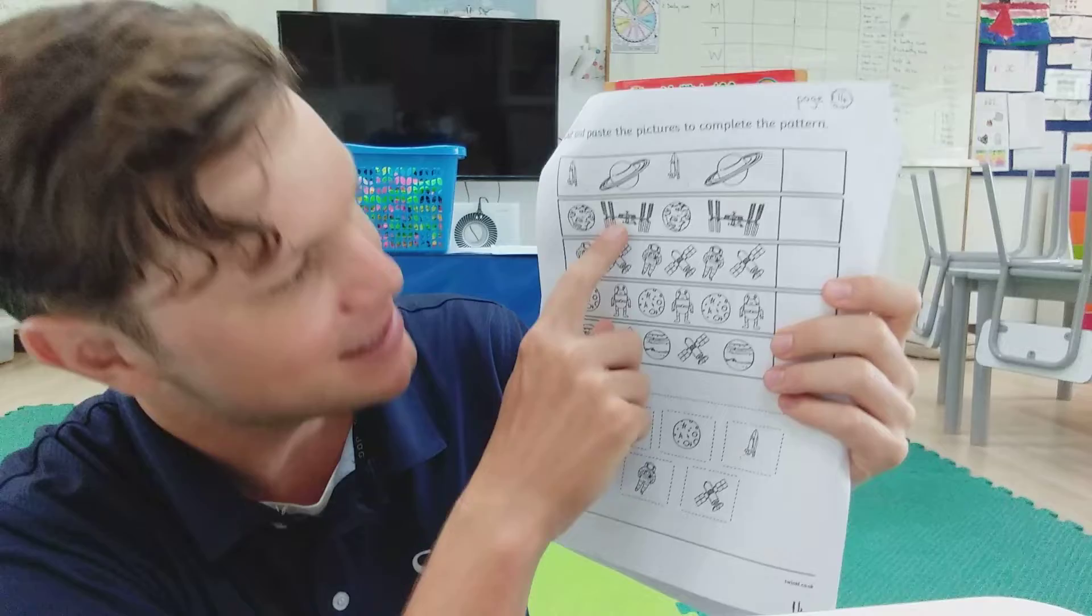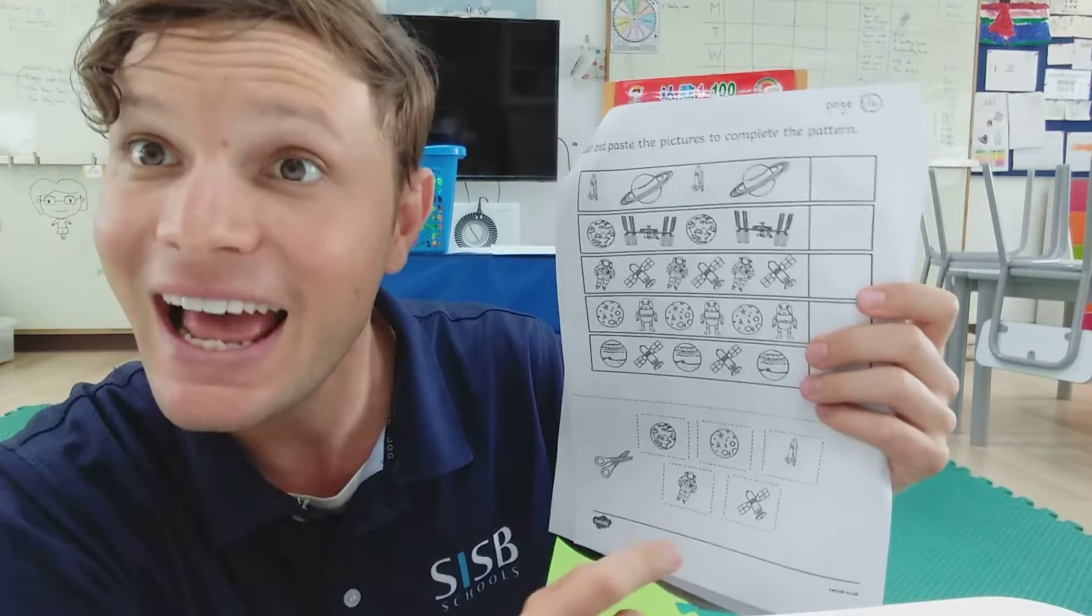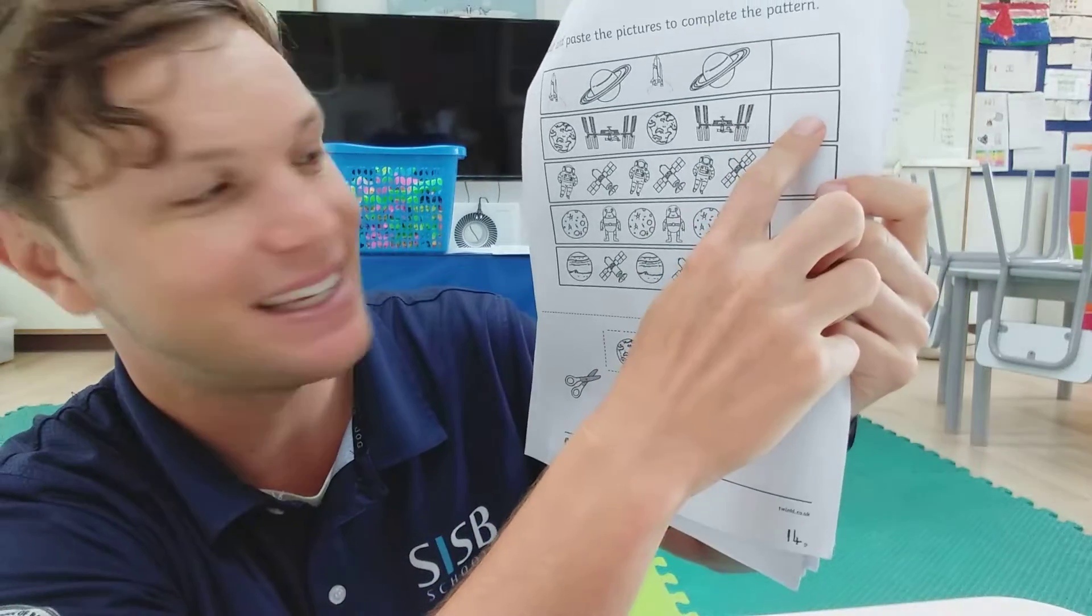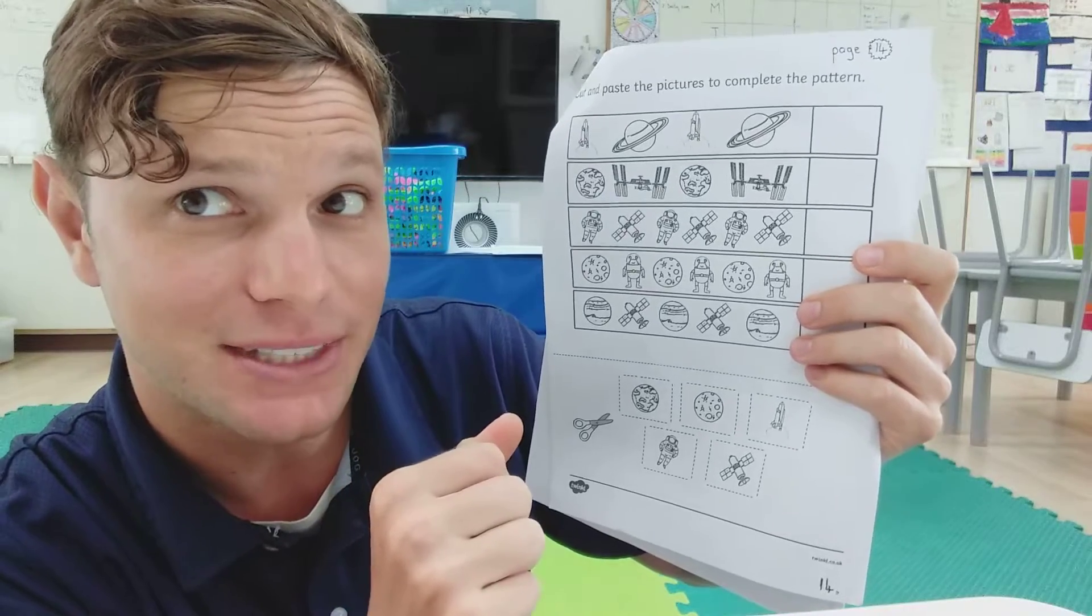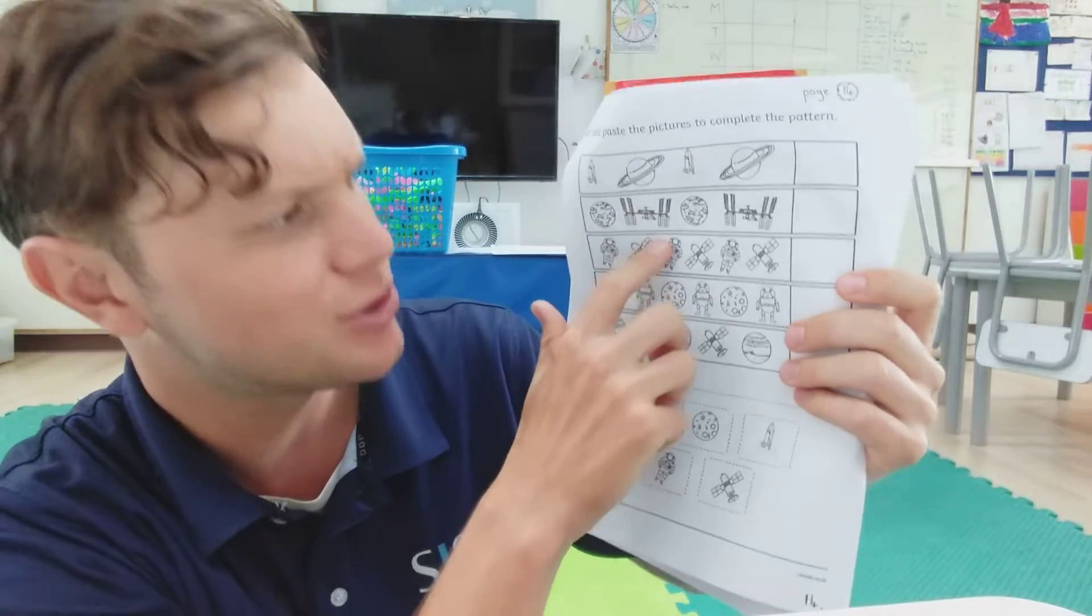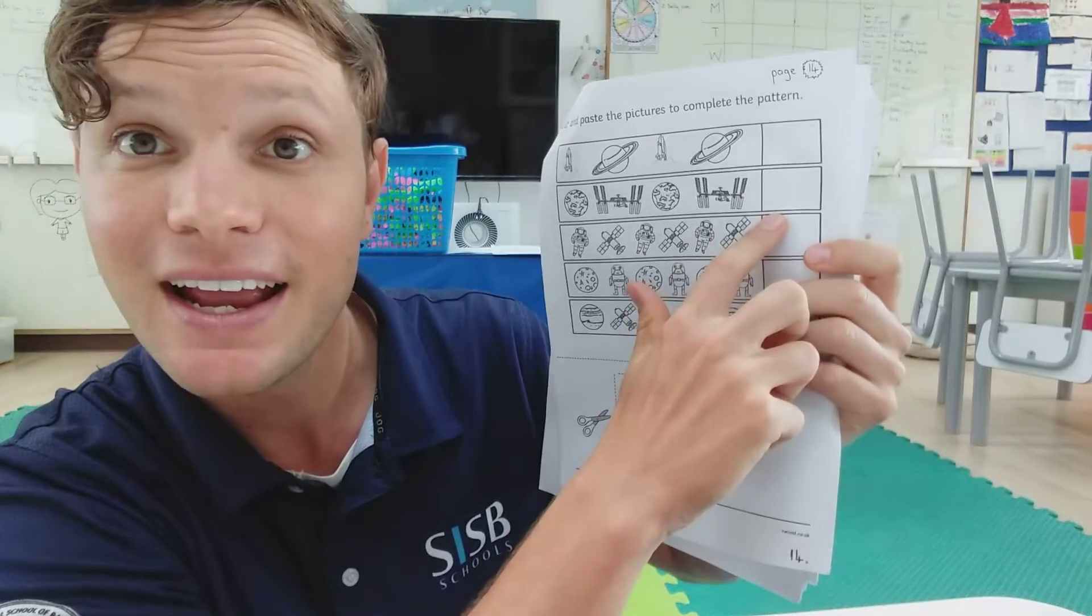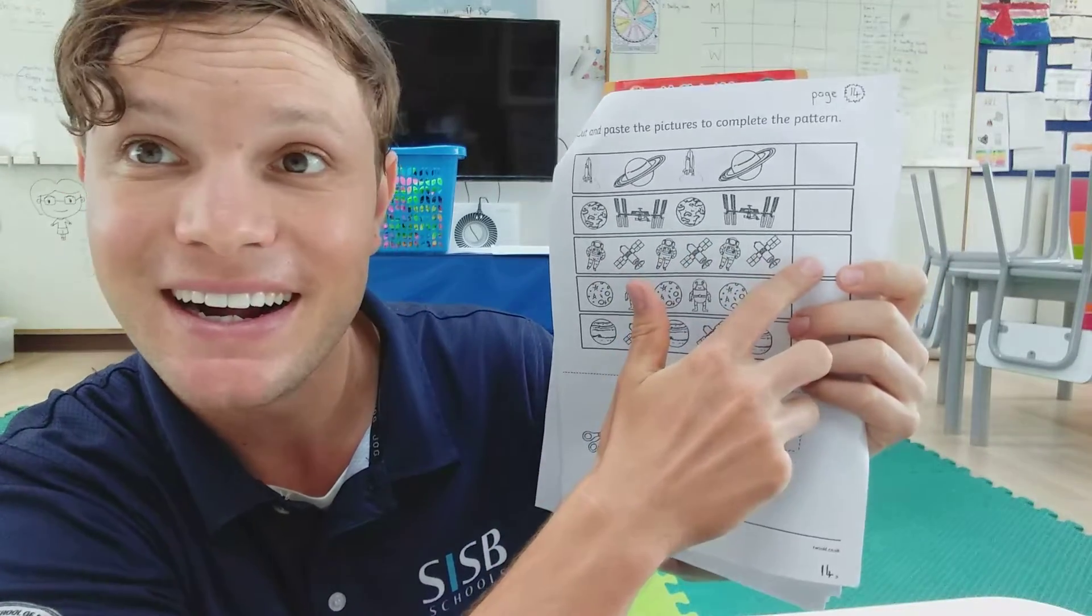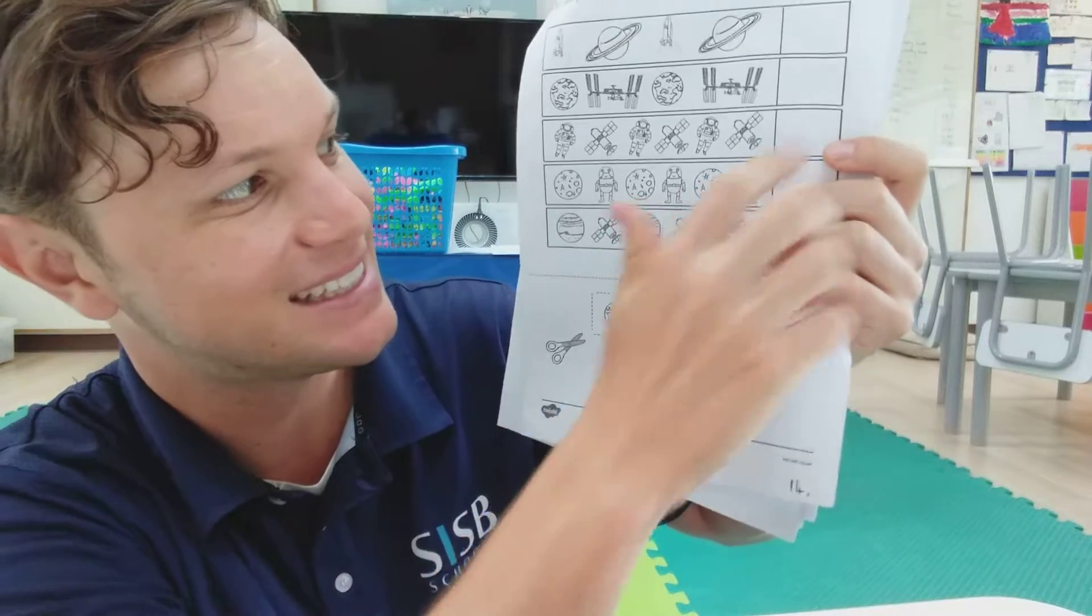So planet, satellite, planet, satellite, planet, right? So we would cut out planet, stick planet here. Let's look at number three together. And then you're going to do by yourself. Astronaut, satellite. Astronaut, satellite. Astronaut, satellite. What do you think? Astronaut, right? So we cut out astronaut and stick him here.